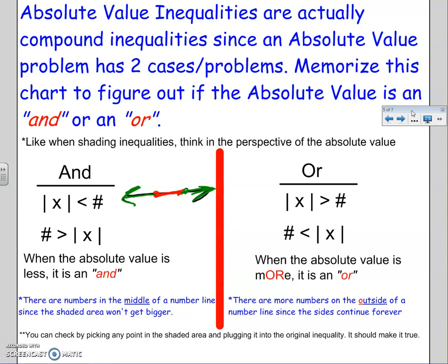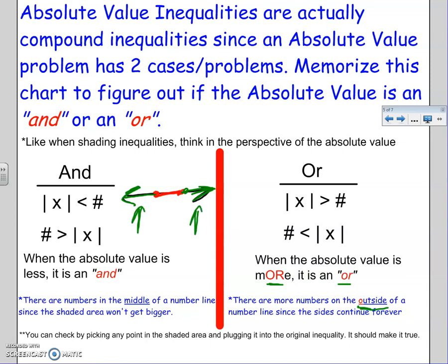Use that same idea for ORs: when the absolute value is greater, it's bigger — so when absolute value is bigger than any number, it's OR. Same thing when written backwards: a number less than the absolute value means the absolute value is still bigger — always look from the perspective of x. When the absolute value is more, it's OR. I remember this because the OR is in the word 'more.' Also, the O in outside goes with the O in OR because the outside shading goes on forever to the left and right. You can always check by picking a point in the shaded area and plugging in.